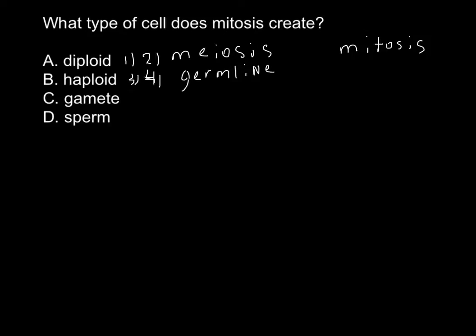this initially diploid cell would produce four haploid cells, and we call these cells gametes. Gametes can be of two kinds: one is sperm—germline of males would produce sperm—and germlines of females would produce egg cells. So this is a brief description of meiosis.